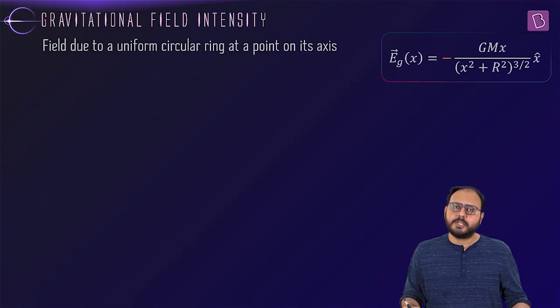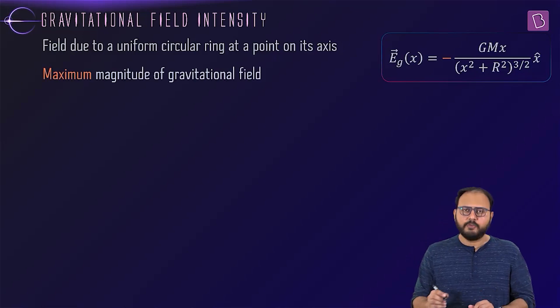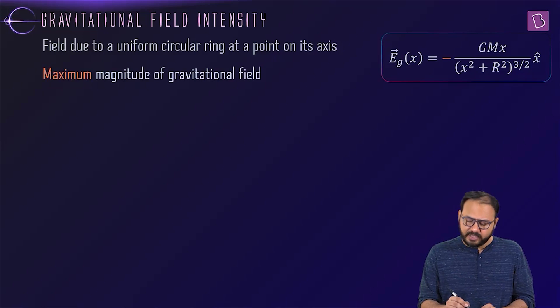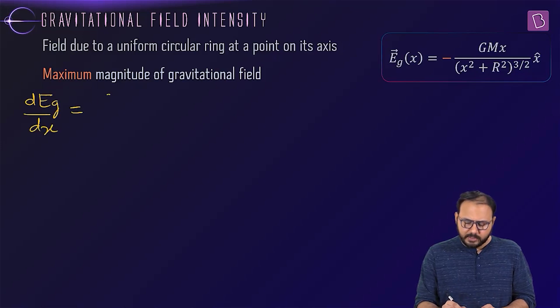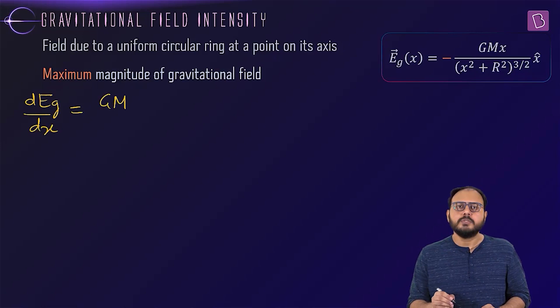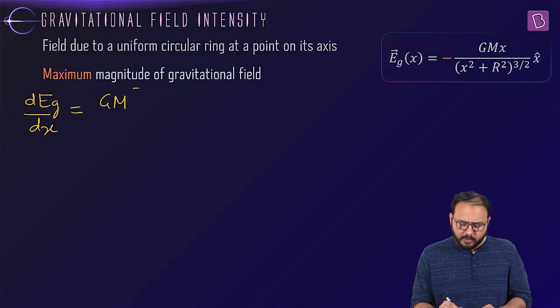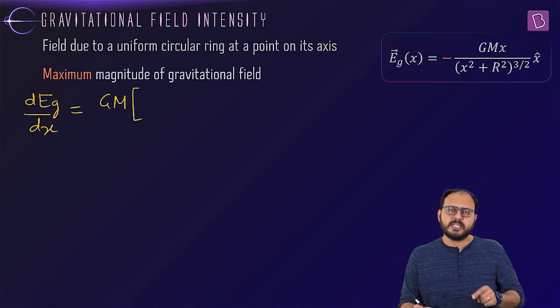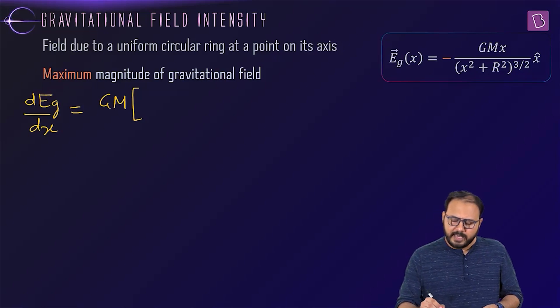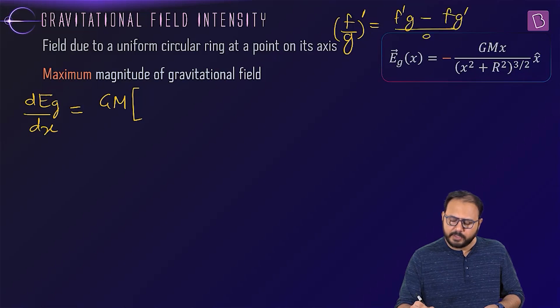You have the expression now. Now only the magnitude. If I talk about only the magnitude. Where will the magnitude be maximum? Differentiate it. We actually have done this but still. Differentiate with respect to what? With respect to x. So leave the minus out. gm as it is. gm as it is. Let's apply quotient rule.